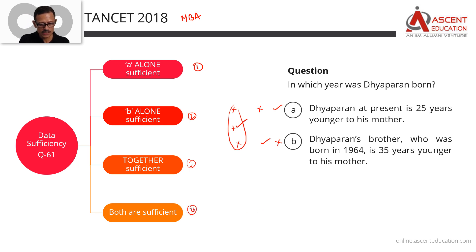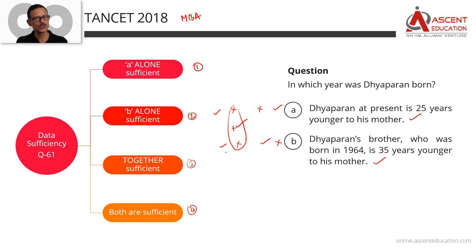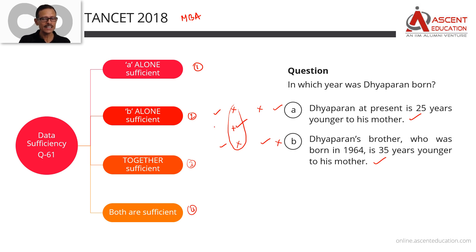Answer option 4: both statements are independently sufficient — A alone is sufficient and B alone is also sufficient. Quick recap: A alone sufficient, B not → answer option 1. B alone sufficient, A not → answer option 2. Neither alone sufficient but together sufficient → answer option 3. Both A alone and B alone independently give you a unique answer → answer option 4.